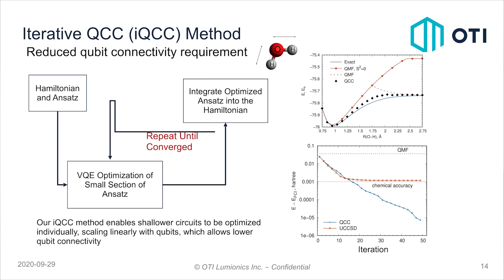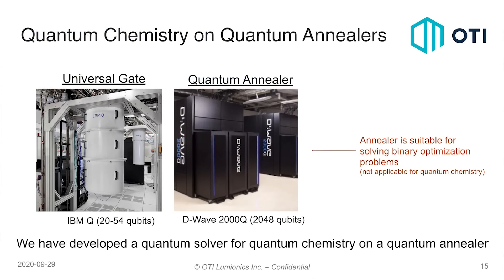Our IQCC method enables shallower circuits to be optimized individually, allows circuits to scale linearly with qubits, and requires lower qubit connectivity. However, even with these advances, for universal gate quantum computers such as IBM Q or Google, we're really looking at about 20 to 54 qubits that are not necessarily fully connected. Whereas with D-Wave, you can get up to 2,048 — and even soon up to about 5,000 qubits — and with the hybrid solvers, even much larger than that. So in order to really simulate large problems, we need a lot of qubits.